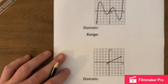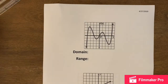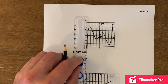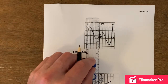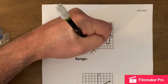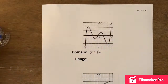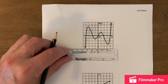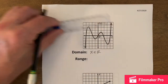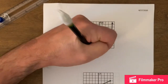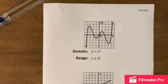A couple more. This one: domain is arrow all the way to arrow, so x is a real number. For the range, we've got arrow to arrow going up and down, so it looks like all y is a real number for that one.